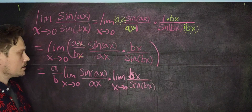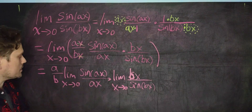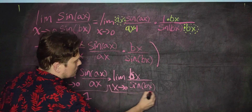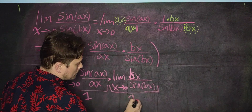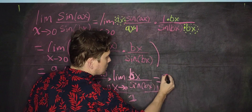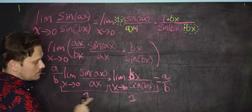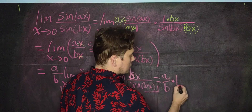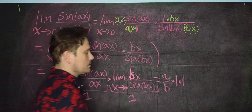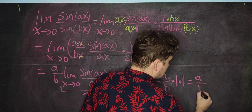This is what we have thus far. The nice thing is a over b is just a constant. Each of these individual limits is well known — the limit of sine ax over ax equals 1, and likewise the limit of bx over sine bx is also equal to 1. Therefore you end up with a over b times 1 times 1, and at the very end the only thing remaining is a over b.